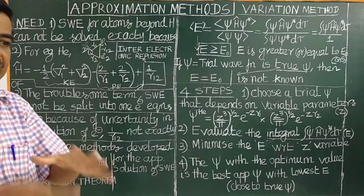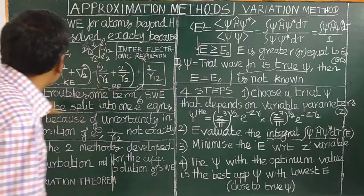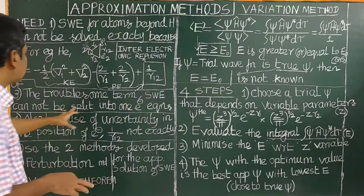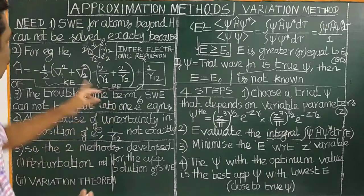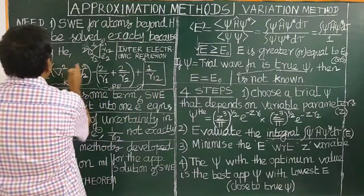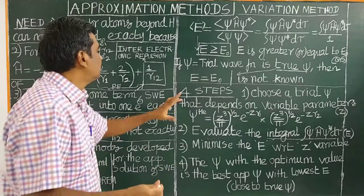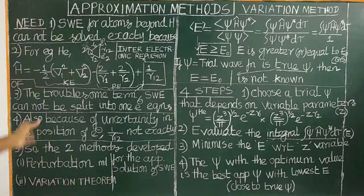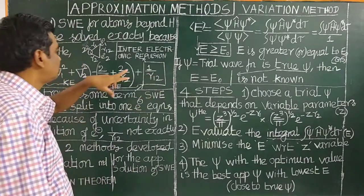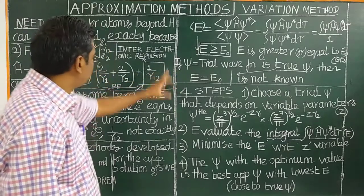For atoms beyond hydrogen, the Schrödinger wave equation cannot be solved because of this troublesome inter-electronic repulsion term. Because of this term, the Schrödinger wave equation cannot be split into individual one-electron wave equations. This inter-electronic repulsion term is called the perturbation term.